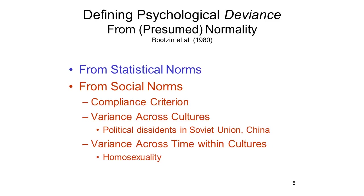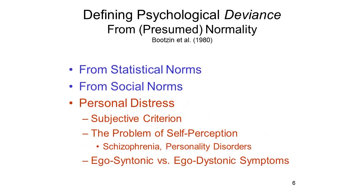If we're looking for an objective standard by which to evaluate deviance, we really want one that's constant across groups. The length of a foot or a yard doesn't vary from Denmark to Ghana, nor does the diagnosis of cancer. Why should the criteria for mental illness be any different?